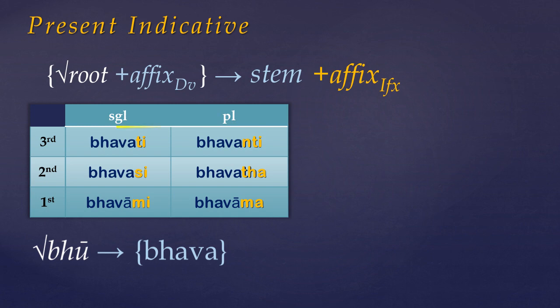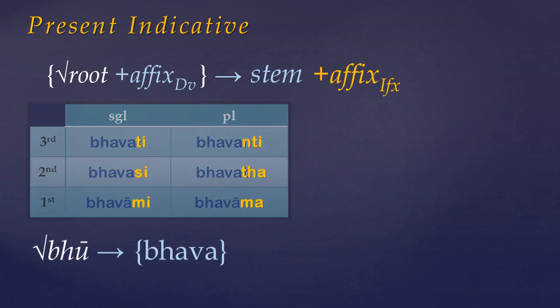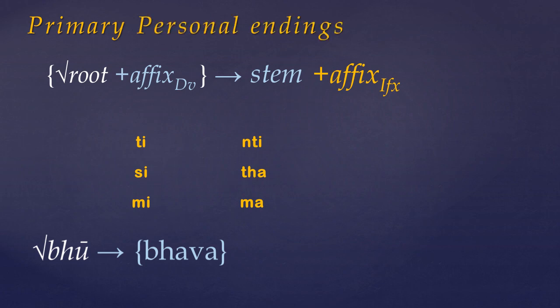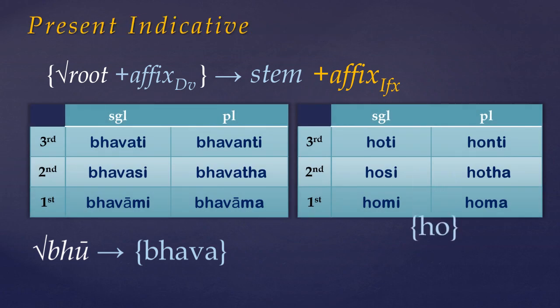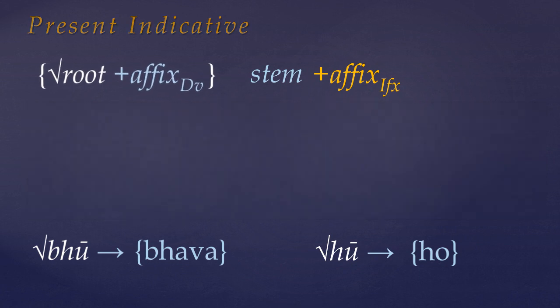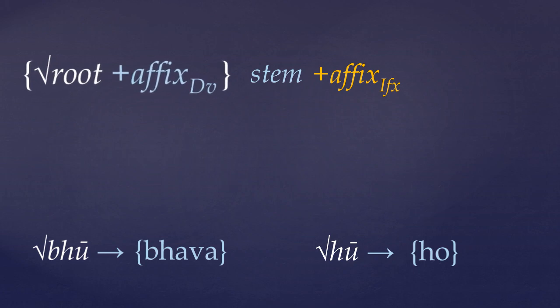In fact, these endings are common to just about all present indicative verbs, and so are worth committing to memory. Especially the third person singular, as this is how verbs are listed in the dictionary. These endings are so common that they're called the primary personal endings. Hoti is another form of the verb to be. But it is much more common, bhavati being reserved for formal or eloquent speech.